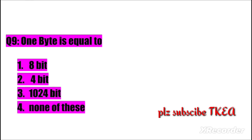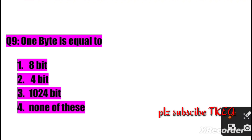Question number nine: One byte is equal to? Option one: eight bits, two: four bits, three: 1024 bits, four: none of these. The right answer is number one: eight bits.